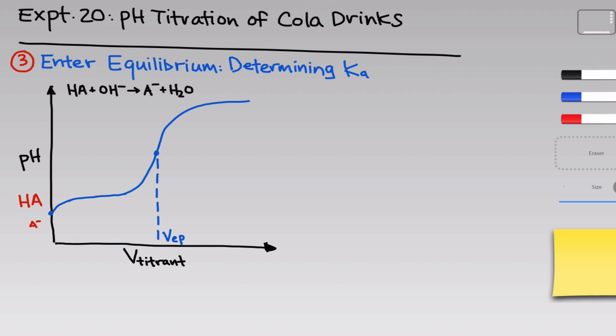We can measure the initial pH before the titration starts — I'll label that pH_S, S for the start of the titration, to avoid confusion with 'initial' which comes up later. pH_S is the pH of the solution at the start before any titrant is added. I want to focus on the relatively flat portion of the titration curve. What does it mean that this portion is flat? We're adding a fixed number of moles of base to the analyte solution but not seeing a large change in pH.